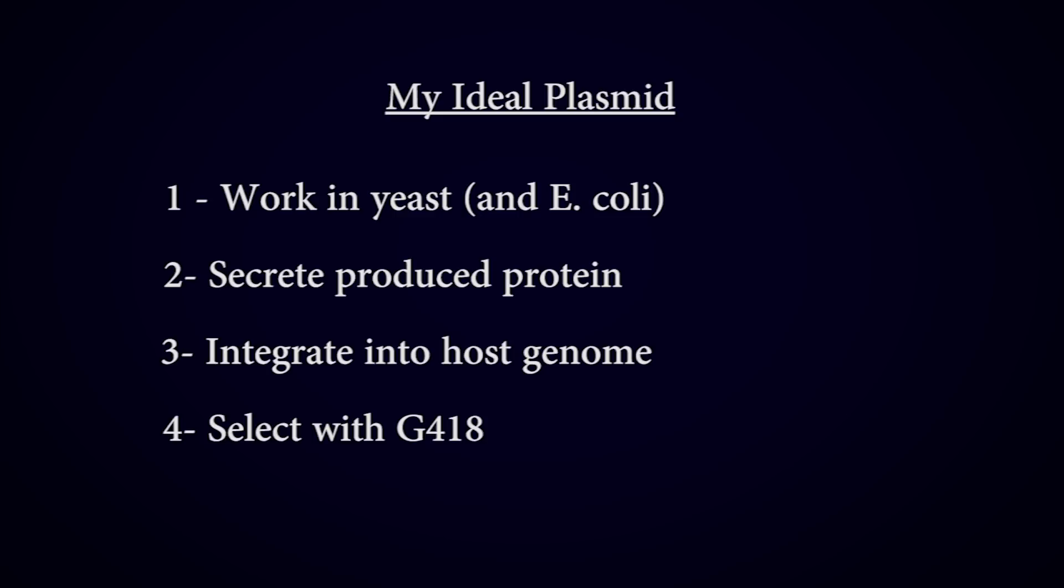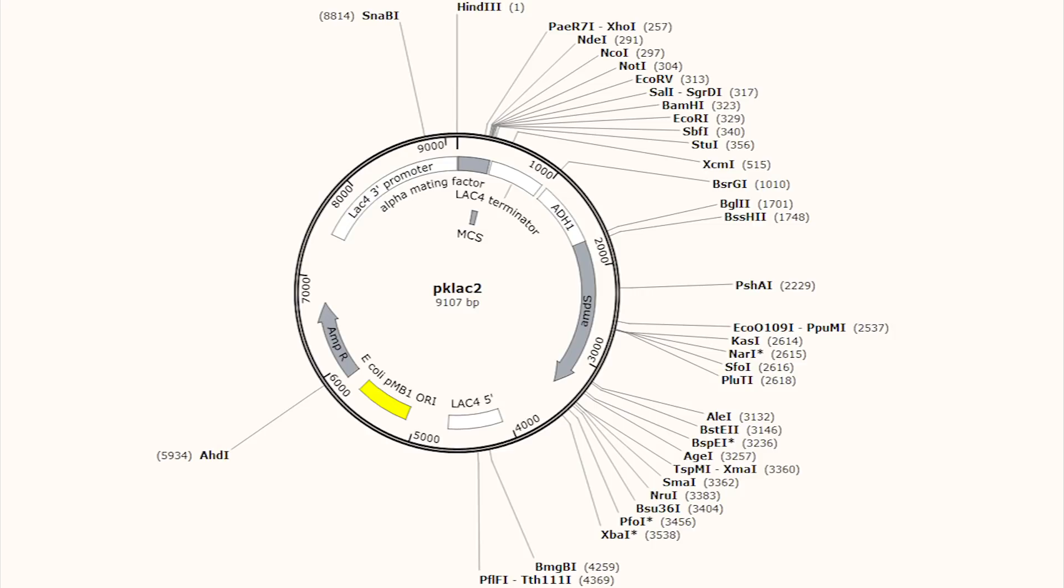Whatever plasmid we choose to start with is called the backbone. Now unfortunately this doesn't quite exist, but there is a plasmid that's close. It's called PK-Lac-2, and New England BioLabs made it. Here's the plasmid map, so let's quickly go over what's in here. The first bits are things for working in E. coli, so resistance to ampicillin, which is the standard antibiotic for E. coli selection, and an ORI, or origin of replication, which is the spot the DNA starts being copied from as the E. coli grows and divides.